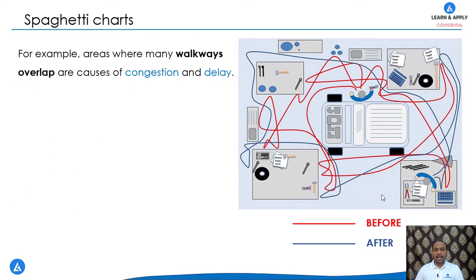The main focus of the spaghetti diagram is to eliminate the disturbances. For example, areas where many workways overlap are causes of congestion and delays. Waiting of material or person is one type of waste in Lean and the spaghetti diagram is also focusing how we can reduce the waiting times.